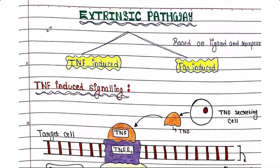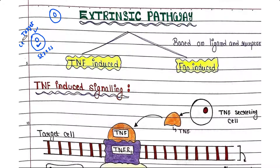We have seen in the previous video that the extrinsic pathway of apoptosis occurs when a cell is undergoing internal stress but cannot sense that stress itself. Another cell will sense the stress occurring inside the target cell, release certain substances, and send signals to the target cell so that it undergoes apoptosis.